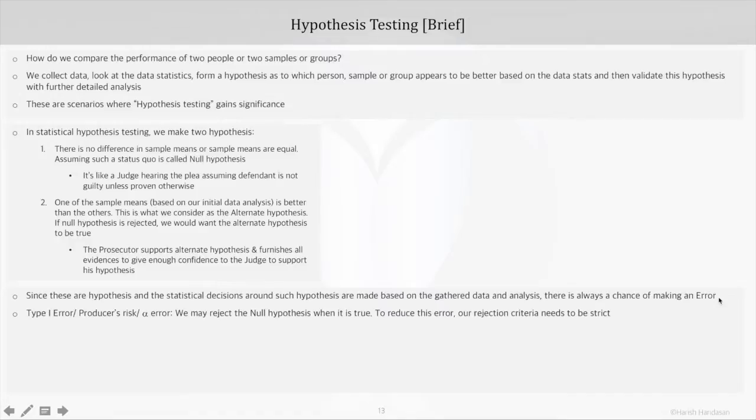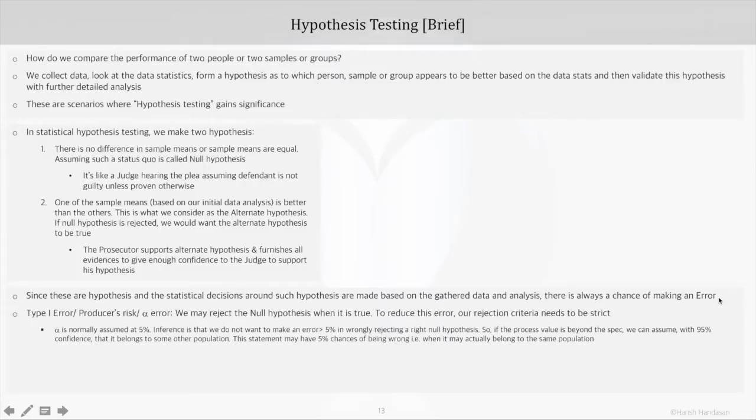If we want to reduce this error, our rejection criteria should be strict. In hypothesis testing, we assign a level of significance during the testing which is called alpha. It's normally taken at 5%. What it means is that while testing our hypothesis, we do not want to make an error greater than 5% in wrongly rejecting the null hypothesis. And 100 minus alpha is called the level of confidence, so in this case we would have 95% confidence on our statistical decisions, which in turn would mean that there would be those 5% instances where our statistical decision stands a chance to be wrong.